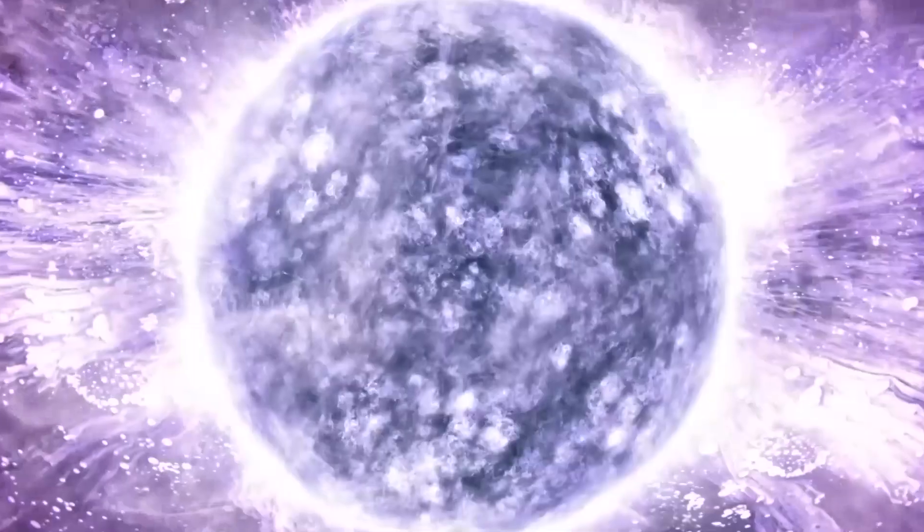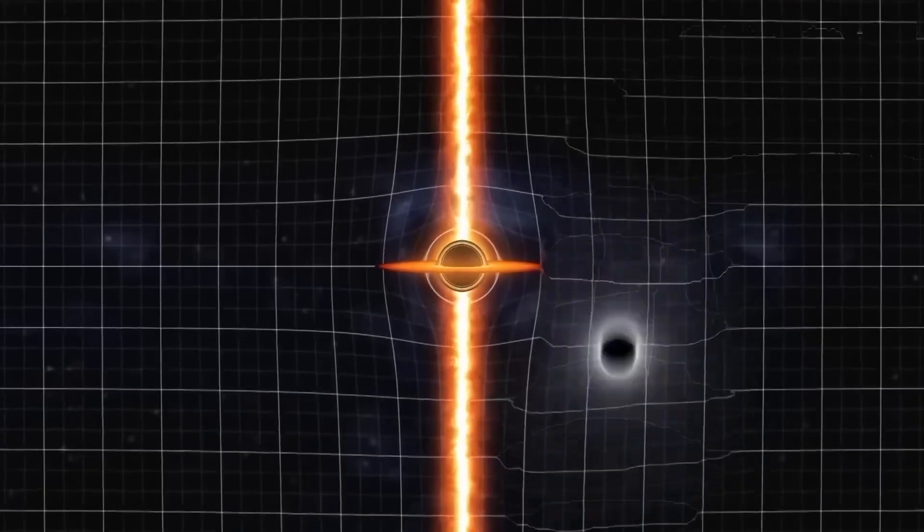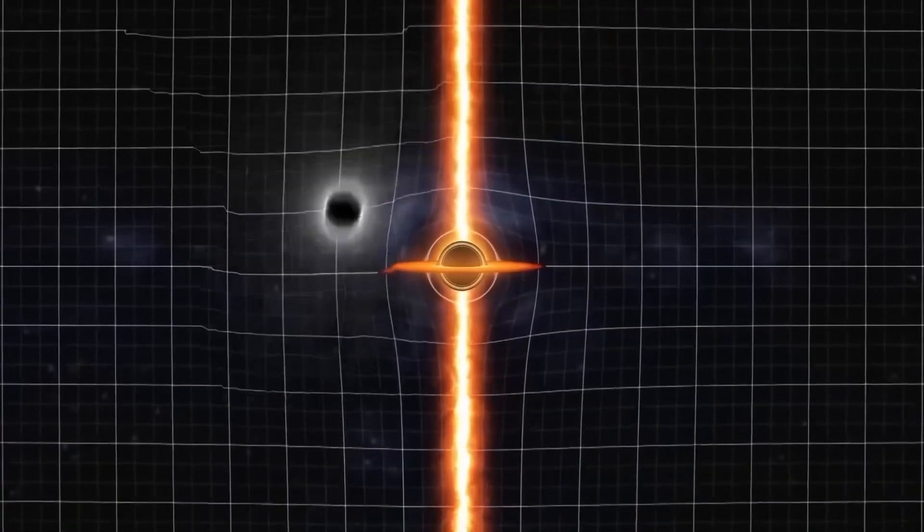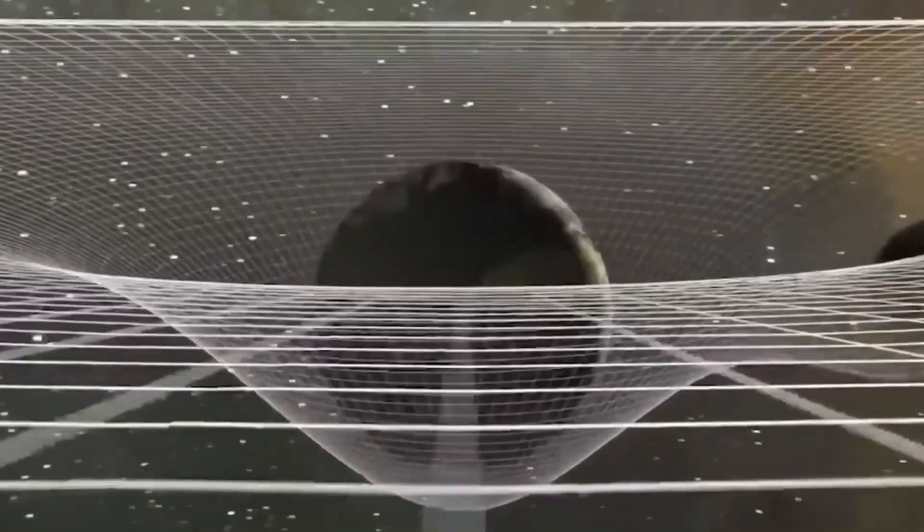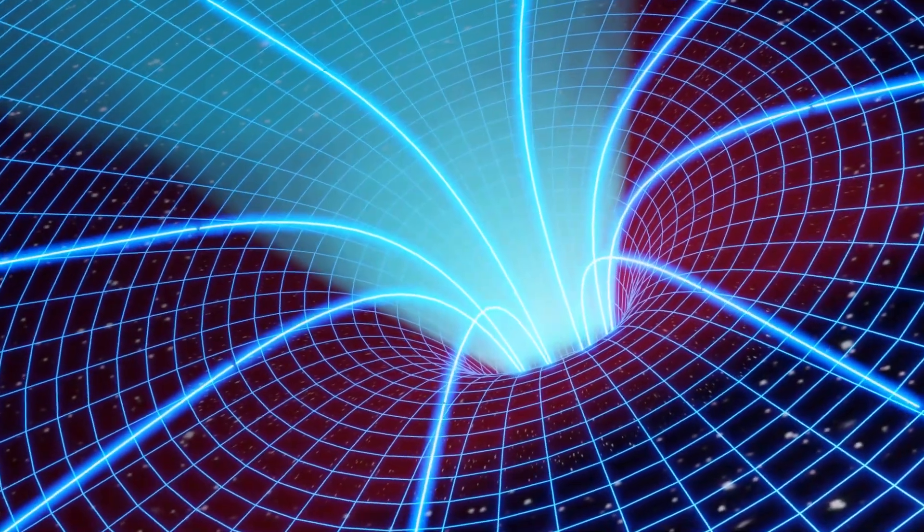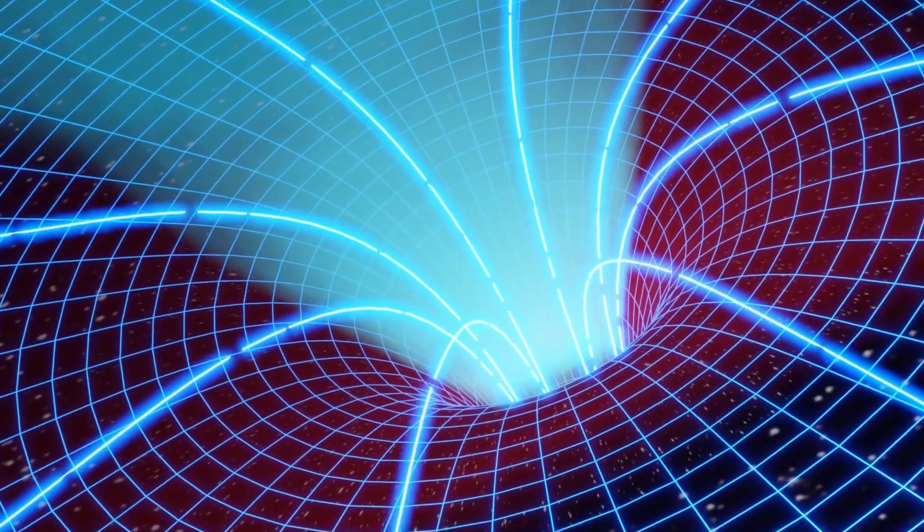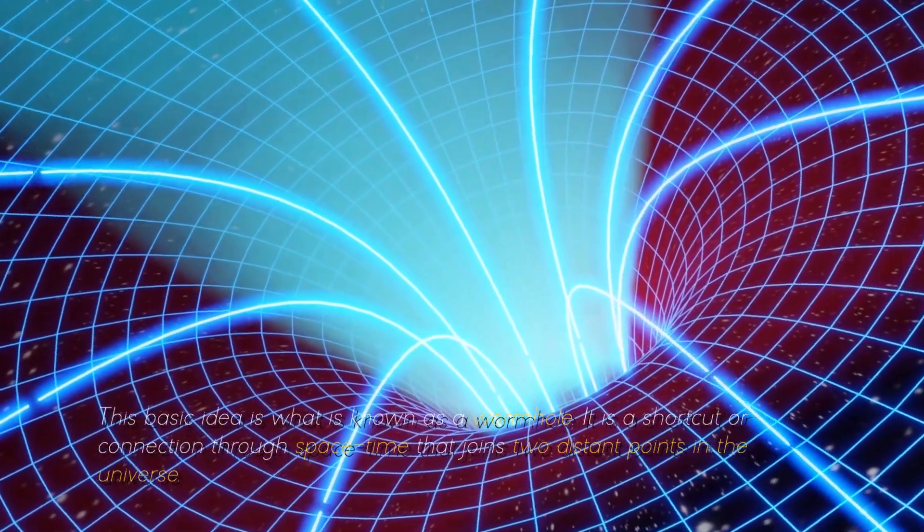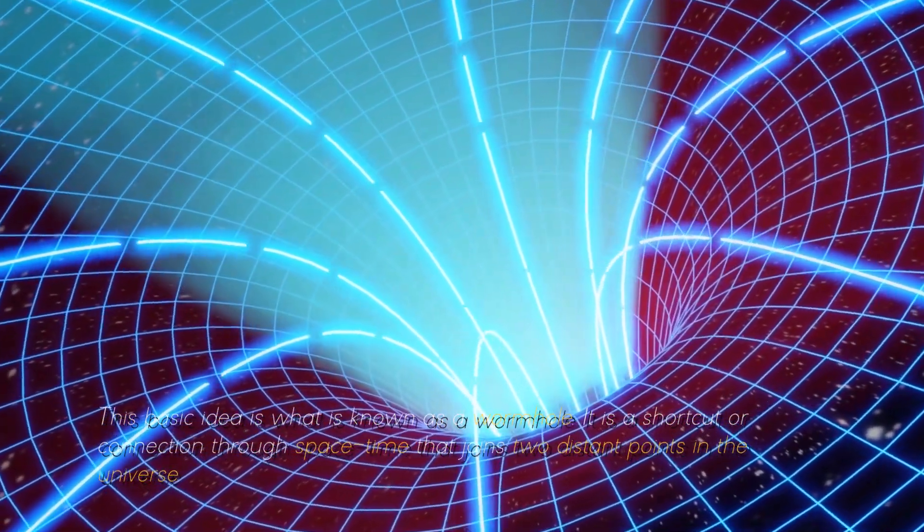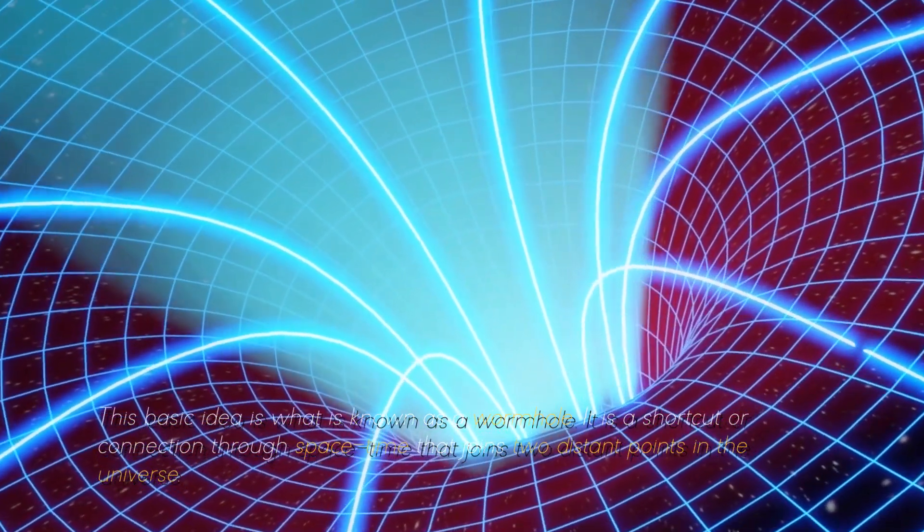To visualize this, we can imagine a sheet of paper representing space-time. If we place two points onto the paper and draw a line between them, we are representing how objects move through space-time. Now, let's consider folding the paper in half and creating a shortcut between those two points. This basic idea is what is known as a wormhole. It is a shortcut or connection through space-time that joins two distant points in the universe.